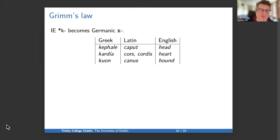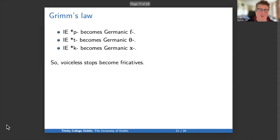Indo-European K becomes Germanic H, pronounced H in English. So we have kephale in Greek, caput in Latin, where the letter C makes the K sound, and head in English. Kardia in Greek, cor in the nominative and cordis in the genitive in Latin, and heart in English. Kuon in Greek, canis in Latin, and hound in English. So that's the evidence for K turning into H. And now we see P changes into F, T changes into Th, K changes into H. So altogether, we have voiceless stops becoming fricatives.